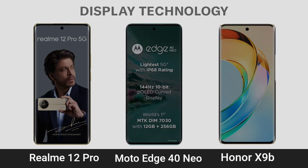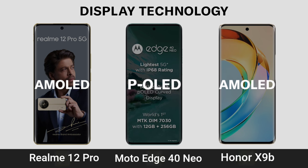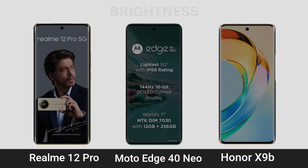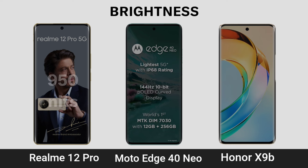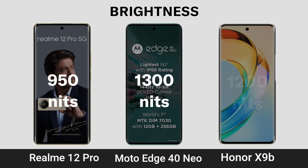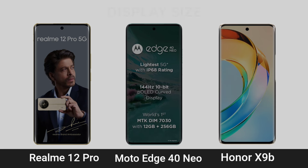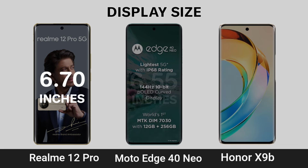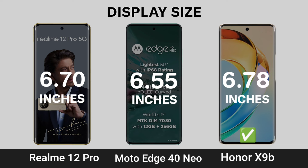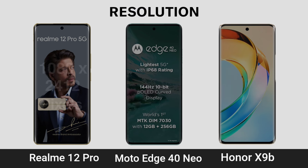Display Technology. Display Brightness. Display Size. Display Regulation — comparing the display specifications across the three phones: Realme 12 Pro, Moto H40 Neo, and Honor X9B.